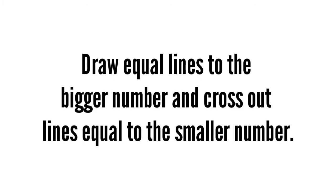First we have to know what is vertical subtraction. In vertical subtraction, you have to draw equal lines to the bigger number and cross out lines equal to the smaller number. Let's see some examples. Example number one is four minus three.